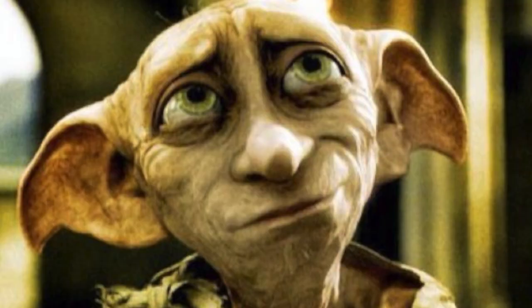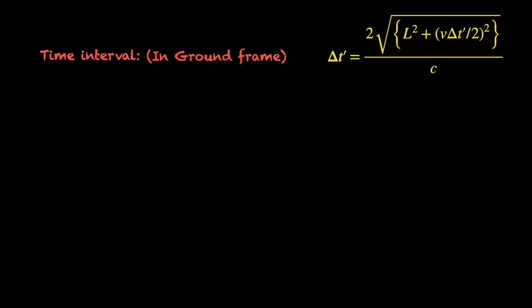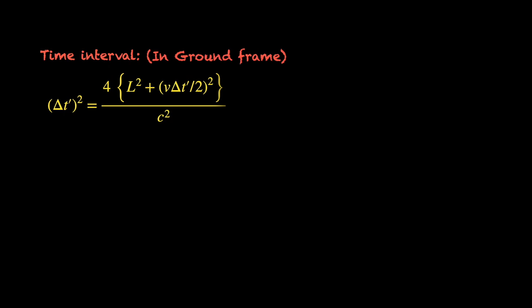Naturally, delta t prime calculated from ground turns out to be longer than delta t calculated from the cart. How much longer? Well, a little algebra, you know, squaring the equation for delta t prime, rearranging the brackets, changing sides.